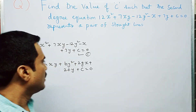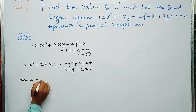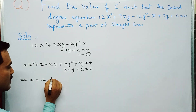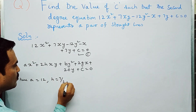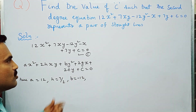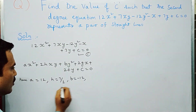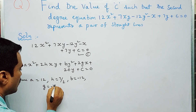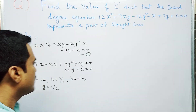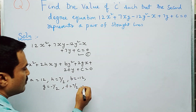Comparing the two equations, we get: A = 12; 2H = 7, so H = 7/2; B = -12; 2G = -1, so G = -1/2; 2F = 7, so F = 7/2; and C = C.